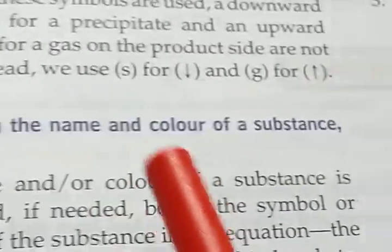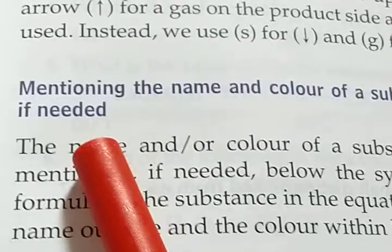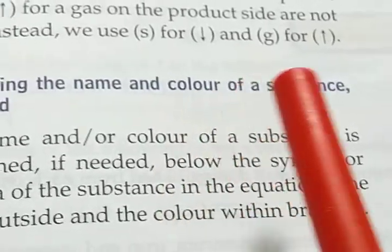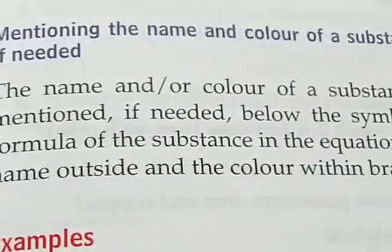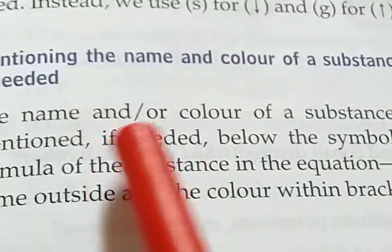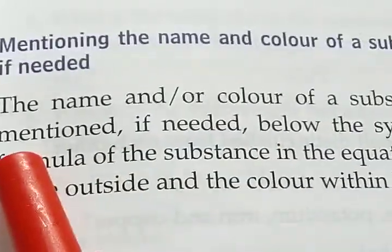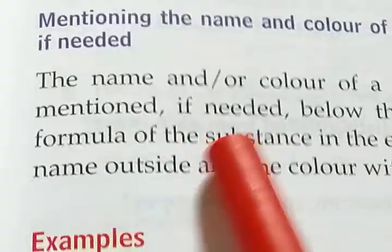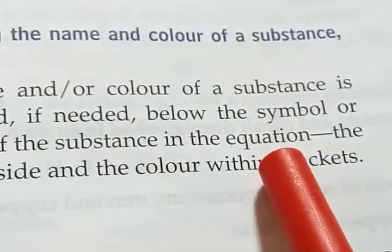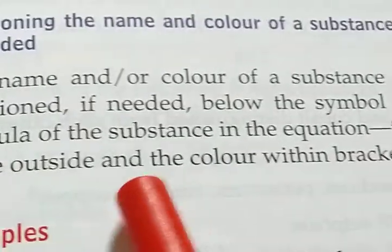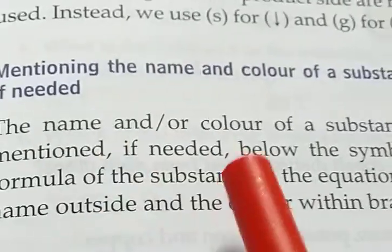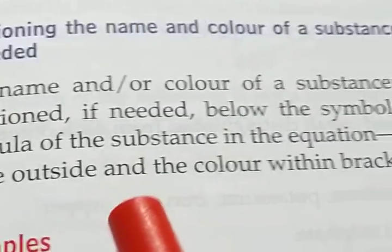Next, mentioning the name and color of a substance if needed. If required, the name of elements and color of a substance will be mentioned in the chemical reaction. The name and or color of a substance is mentioned if needed below the symbol or formula of the substance in the equation. The name outside and the color within brackets. So normally in chemical equations, if we need to write the name and color, we write the name on the outside and the color in brackets.